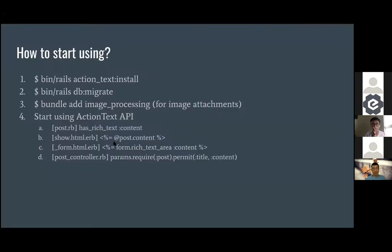That's the demo. I'm also going to talk about how to get started using this — I think this is the most important part, because knowing how it works but not knowing how to use it is a bit pointless. Like all Rails stuff — Rails 6 stuff — we always have a rake task. In this case it's `rails action_text:install`, which will generate some automated code and migration files to set things up.